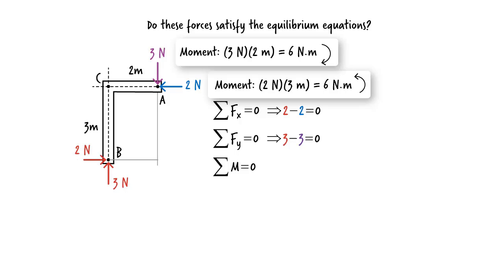Thus, we have two non-zero moments about point B. One is acting in the clockwise direction, and another is acting in the opposite direction. If we assume the clockwise rotation is positive, then we can write the third equilibrium equation as follows. Since the sum is also zero, we conclude that all three equilibrium equations are satisfied. Hence, the bracket is in a state of equilibrium.